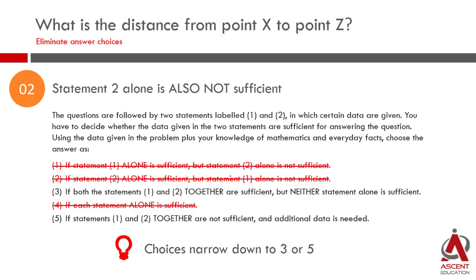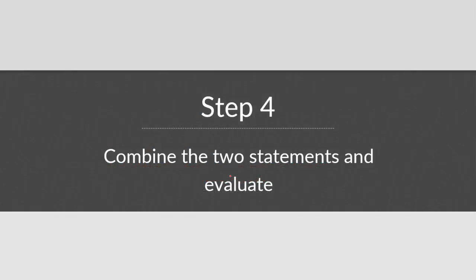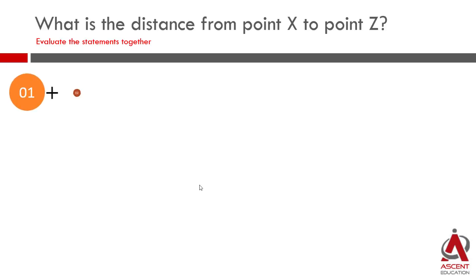We will combine the two statements and check out. If the data is sufficient then the answer choice is 3. If we have not been able to find the answer then the answer choice is going to be 5. Let us combine the information given in the two statements and then check out. What do we have from the two statements?